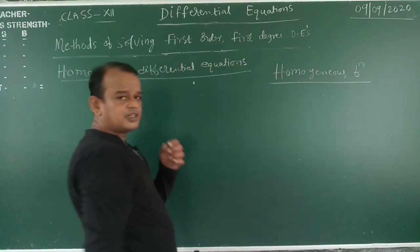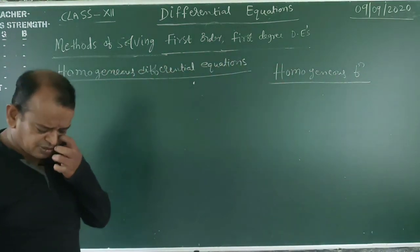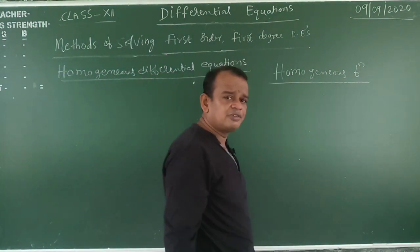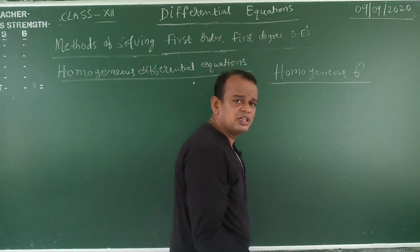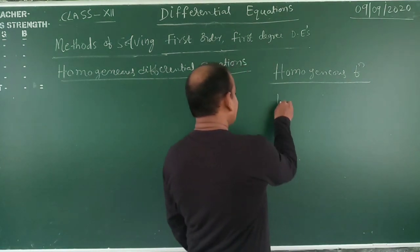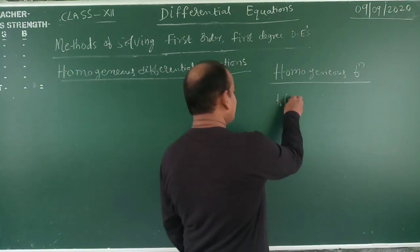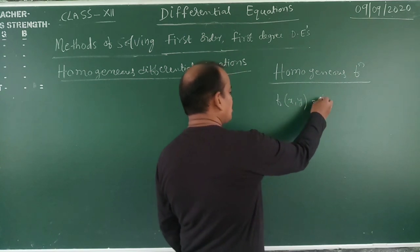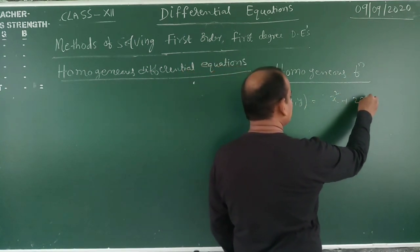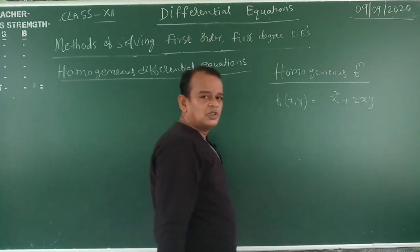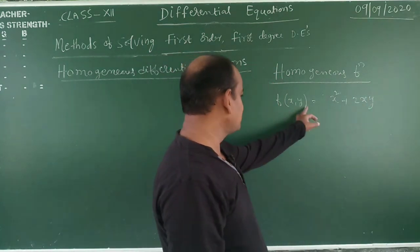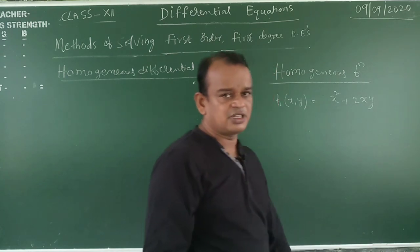What is the meaning of homogeneous function? Simple — the function in terms of x and y. Suppose I take one example: f(x, y) = x² + 2xy. The function in terms of both x and y, f(x, y) = x² + 2xy. That is the function.